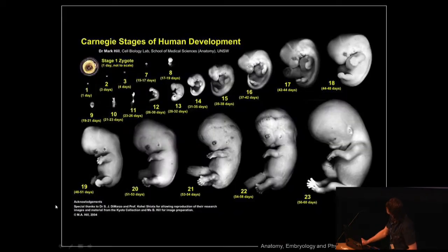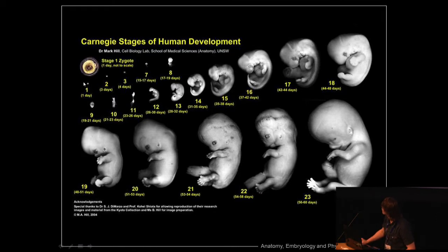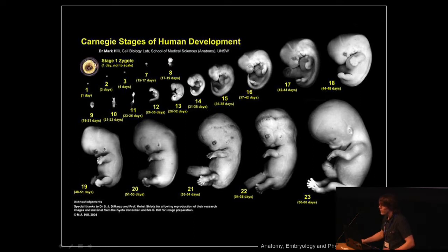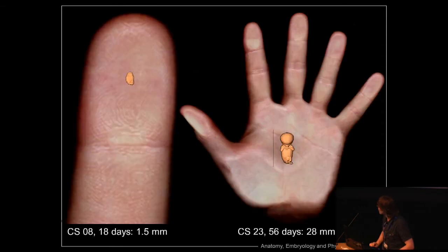Here's another example of development. On the leftmost here is that first day, and the last stage here is around 60 days. This is the Carnegie stages, and these are some of the stages your body will go through when developing. You can see here at what small scale the data actually is.